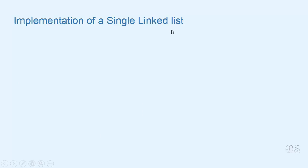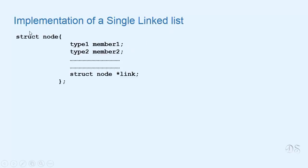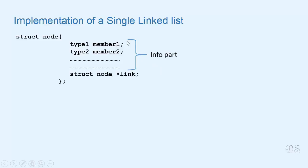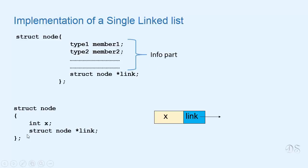Now let us see how we can implement a single linked list in our program. We will take a self-referential structure to represent the node. A self-referential structure is a structure where we have a pointer member that can point to a structure of the same type. So this pointer member 'link' is of type struct node and can point to a structure of type struct node. It is used to point to the next node, and the info part here contains only an integer value.